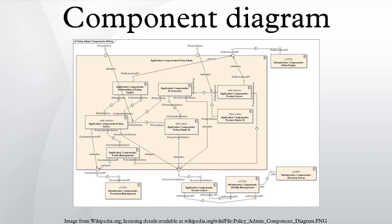The component symbol may have a visual stereotype in the top right of the rectangle: a small rectangle with two even smaller rectangles jutting out on the left. The lollipop — a small circle on a stick — represents an implemented or provided interface. The socket symbol is a semicircle on a stick that can fit around the lollipop, and represents a dependency or needed interface.